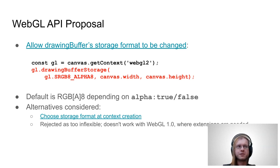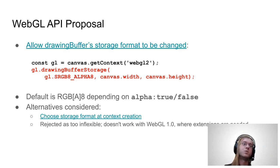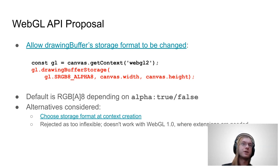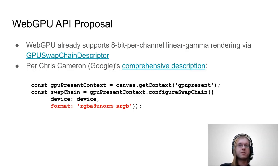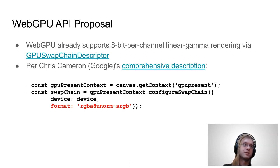We considered some alternatives here, but decided not to move forward with them. One alternative was specifying this at context creation, but that becomes a little confusing in WebGL1 when you don't necessarily know which extensions you have enabled when the context is first created. So we're going with drawingBufferStorage for now. For WebGPU, it's similar — it already has support for this. WebGPU has a separate concept of a swap chain, so it's done by configuring the swap chain with this format. This is expected to work straight out of the box in WebGPU.